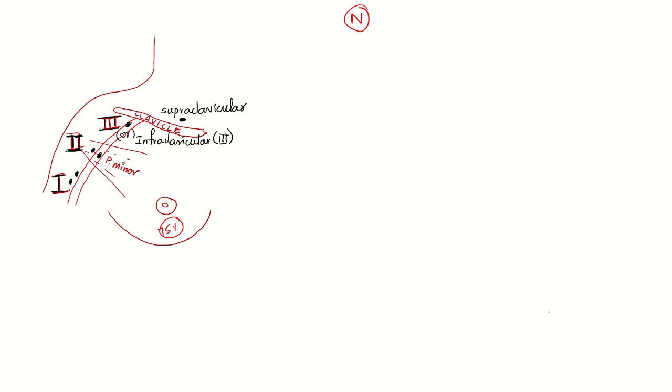One important concept that we need to remember here is that level 3 is nothing but infraclavicular. This is not usually mentioned in anatomy textbooks but it is clearly stated in NCCN guidelines. And supraclavicular lymph nodes - some part of the breast can then further drain from level 3 into supraclavicular lymph nodes as well. So with these basic concepts in mind let's see the N staging.